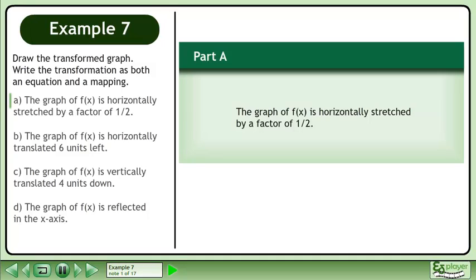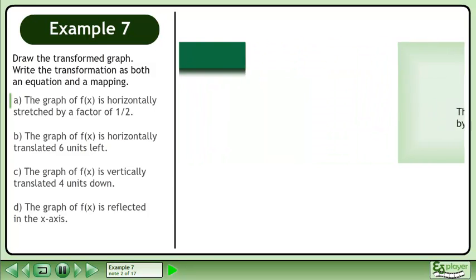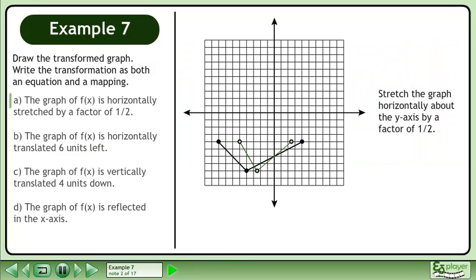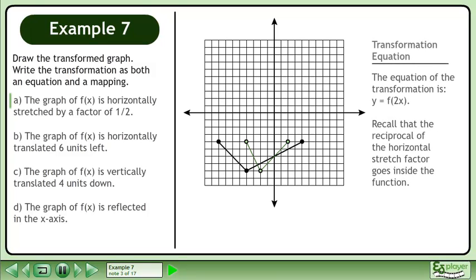In part a, the graph of f is horizontally stretched by a factor of 1 over 2. Stretch the graph horizontally about the y-axis by a factor of 1 over 2. The equation of the transformation is y equals f of 2x. Recall that the reciprocal of the horizontal stretch factor goes inside the function.